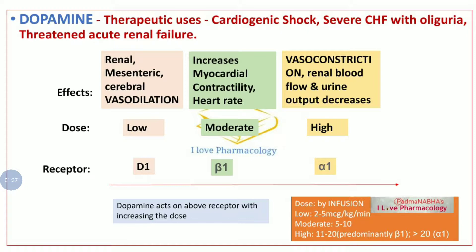At moderately high doses, apart from acting on D1 receptors, dopamine also releases noradrenaline and mainly acts on beta-1 receptors. Beta-1 receptors are present mainly in the cardiac muscle, so it increases the contractility of the myocardium with no significant tachycardia — that means it increases inotropic action without significant chronotropic action. At moderate doses, it can therefore be used in cases of cardiogenic shock.